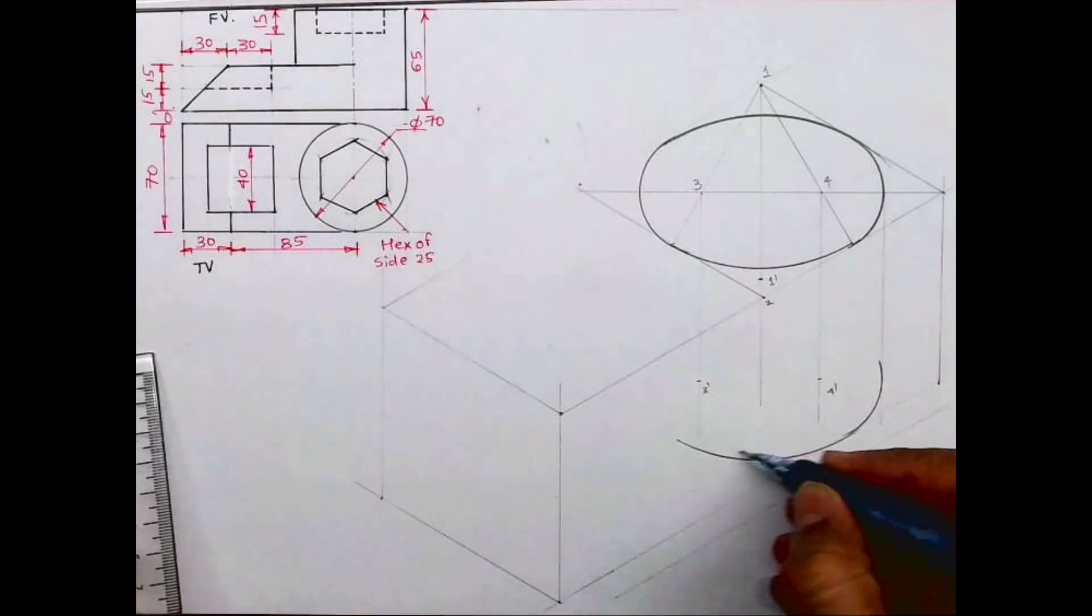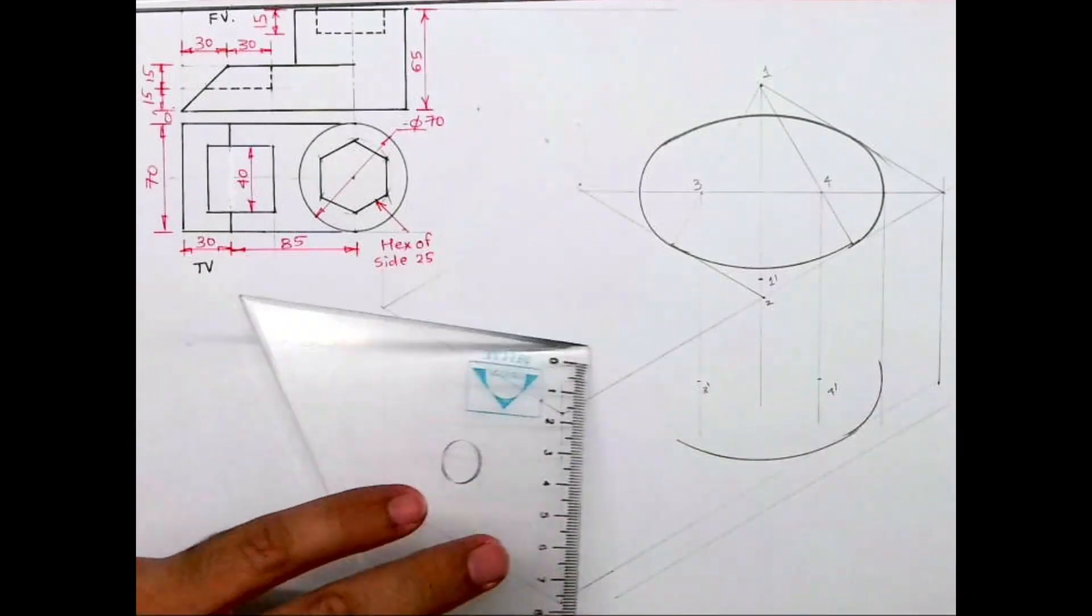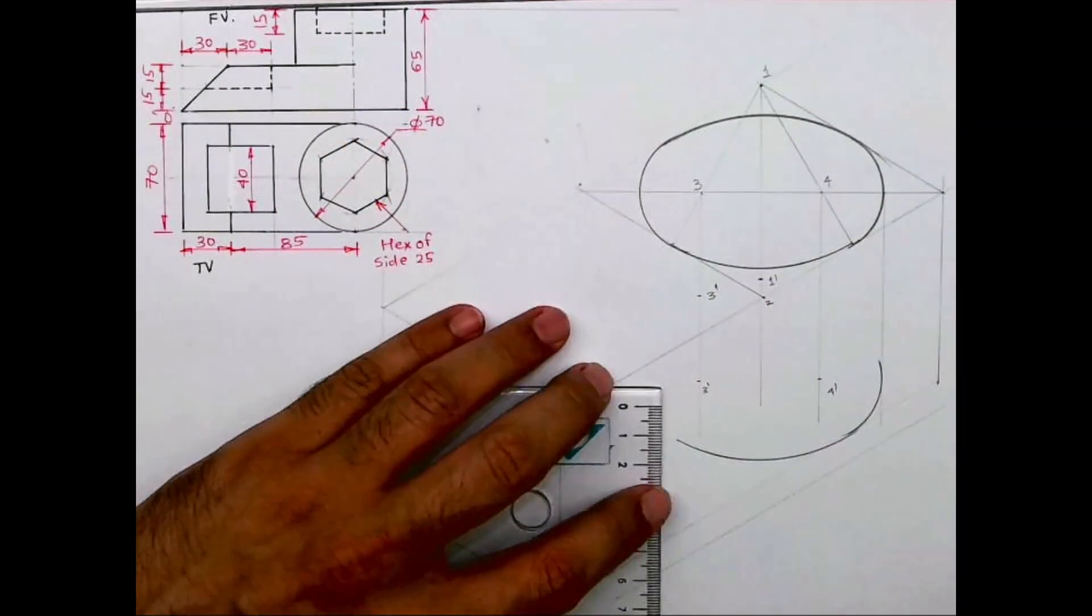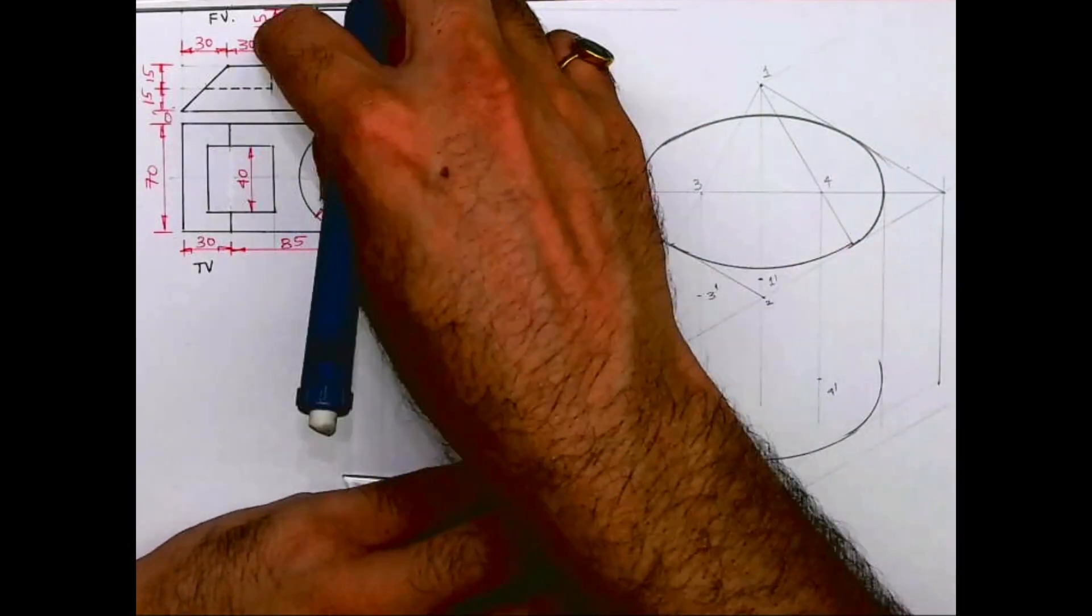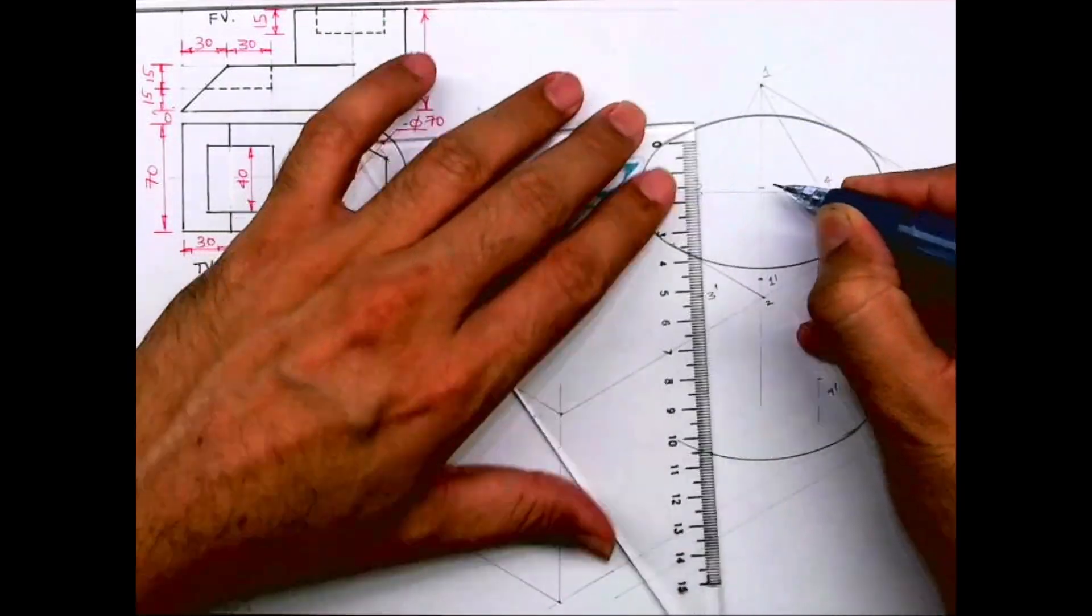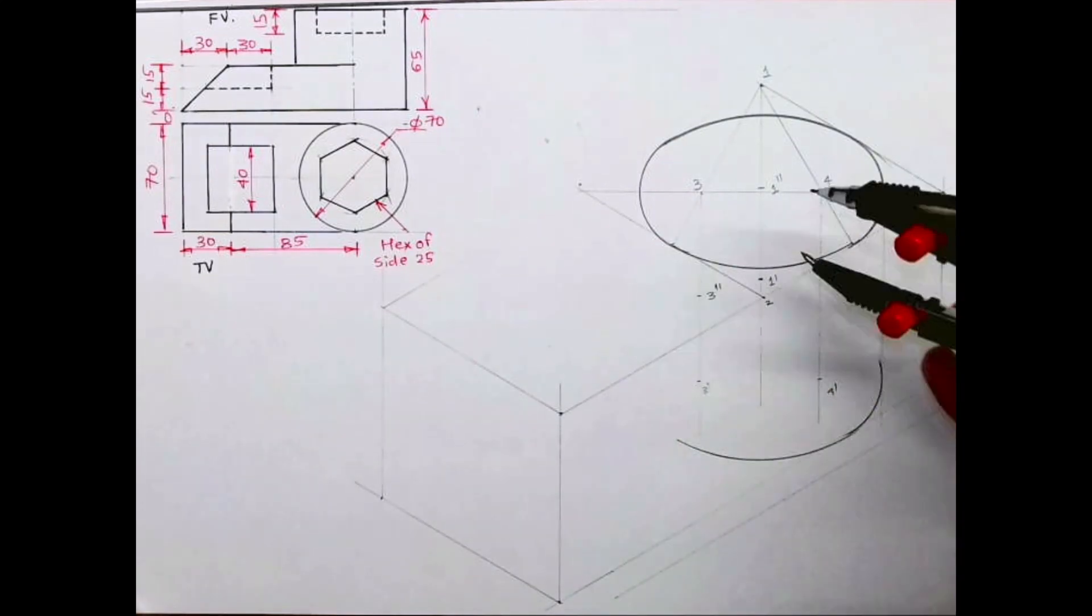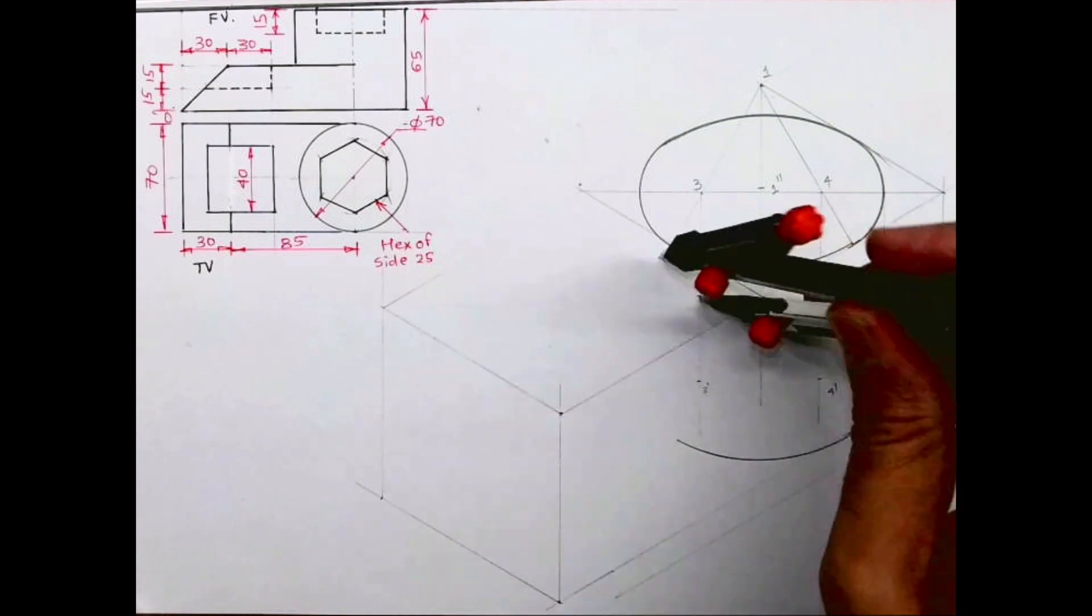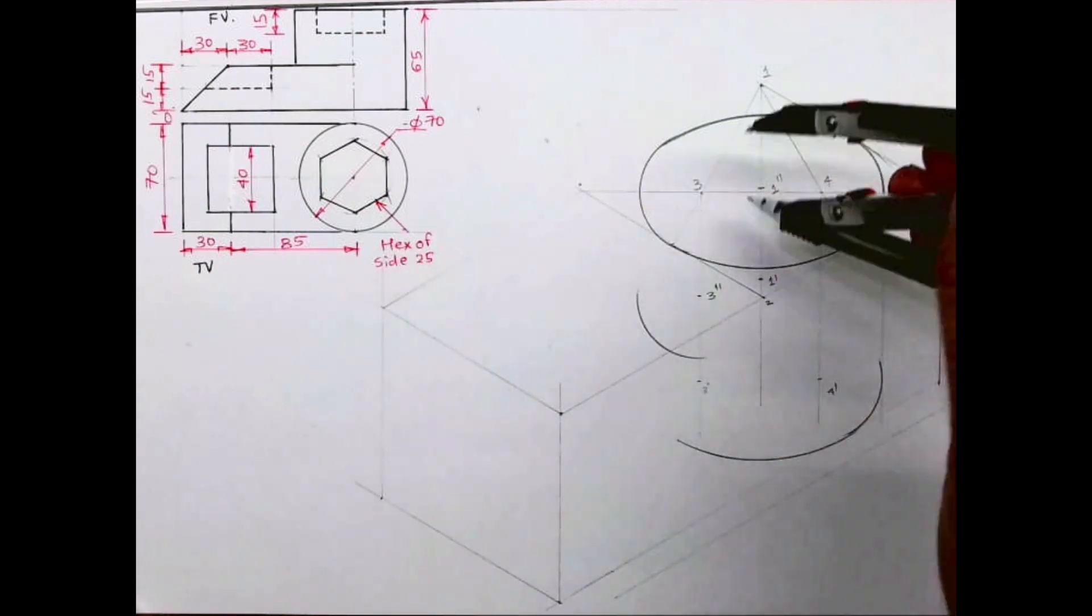Now if you see, this part is 35, see 65 minus 30, so 35 down. So I'll go down by 35 down, I'll write 3 dash, and I'll draw curve. From 1 also I have to go down by 35, so let me write 1 double dash and 3 double dash. How much is it down? 35. So take this original radius, from 3 double dash you draw arc.